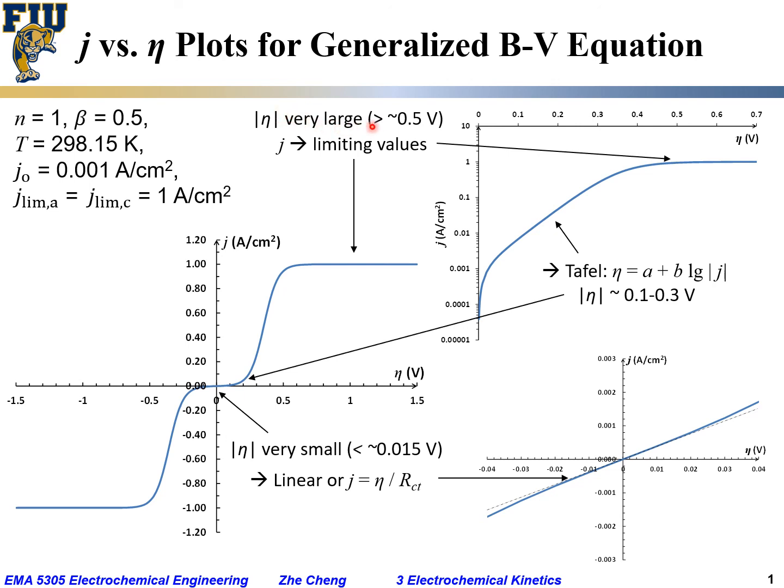And finally, when the overpotential is very, very large, greater than 0.5V or 500mV, then we have a current approaching a limiting value again. Limiting current value again. And in this case, anodic limiting current because we are only considering positive current in this case. So this plot shows the three regions: Linear, Tafel region, and as well as the saturation or limiting region, for an electrochemical electrode reaction. And that can be described by this generalized Butler-Volmer equation.